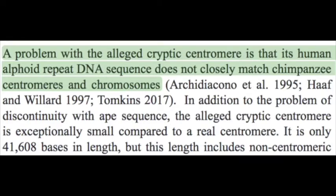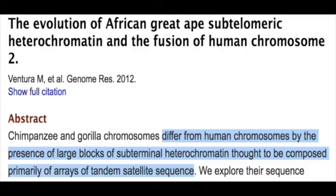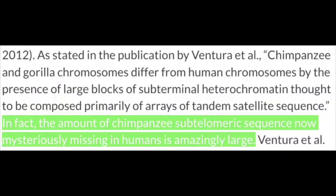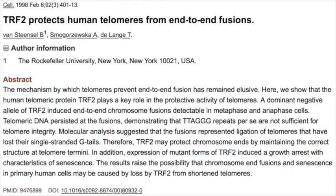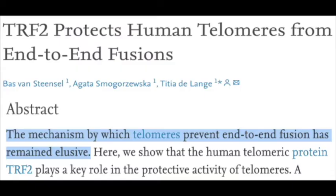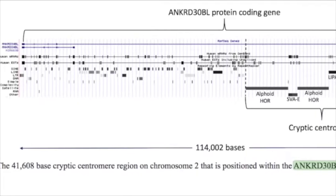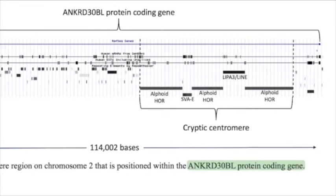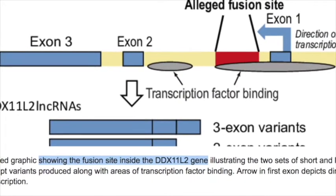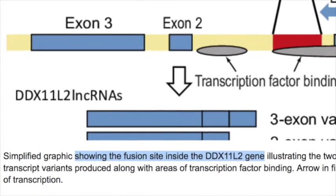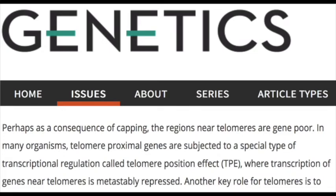Sixth, we should find traces of satellite DNA sequences at, around, or near the fusion site — we do not. Seventh, the highly constrained TPP1 gene in all humans acts to prevent fusion. Eighth, TRF2 protects chromosome ends by maintaining the correct structure of telomeres — TRF2 would have to break instantly to allow a telomere-to-telomere head-to-head fusion event to occur. Ninth, the alleged cryptic centromere site is a key sequence found within the functional gene Ankyrin Repeat Domain 30B — a protein-coding gene also known as ANKRD30BL — covering both intronic and exonic sequences.